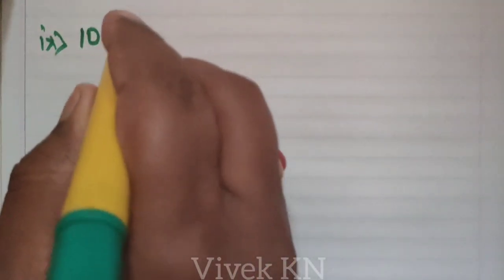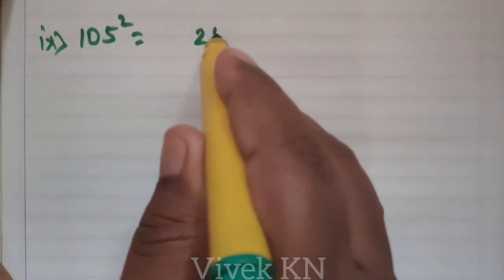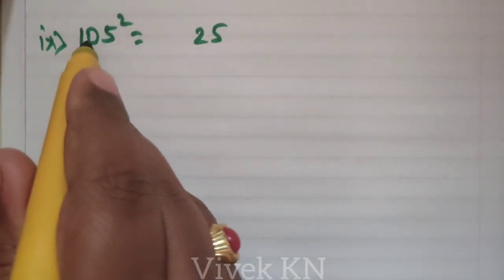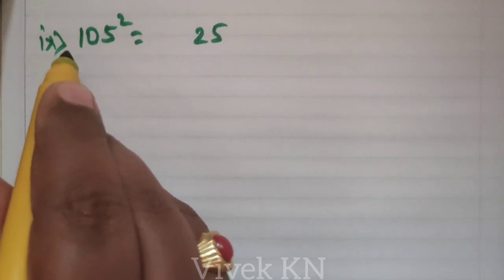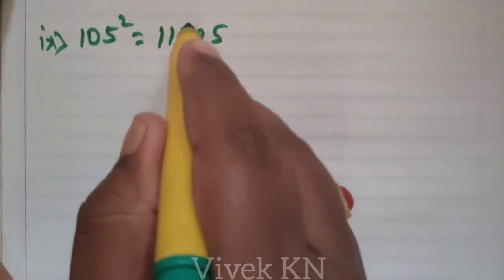105 square. Here, 5 square is 25. The number that comes after 10 is 11. 11 into 10 is 110.